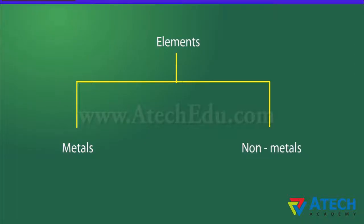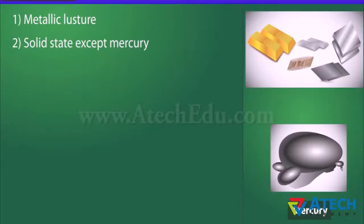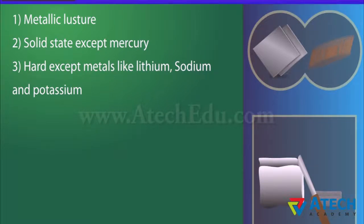All elements are classified as metals and non-metals. The physical properties of metals are different from non-metals. Metals in their pure state have a shining surface — this property is called metallic luster. Normally, metals are present in solid state, but mercury is found in liquid state. Metals are generally hard, except metals like lithium, sodium, and potassium, which are so soft that they can be cut with a knife.